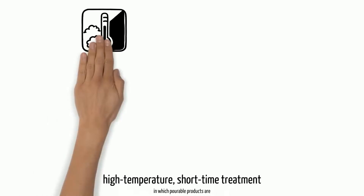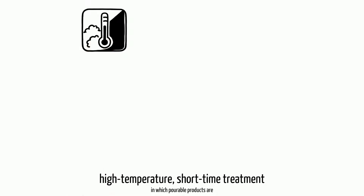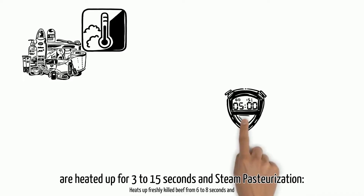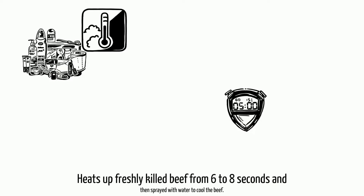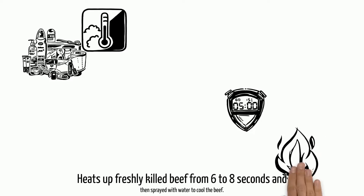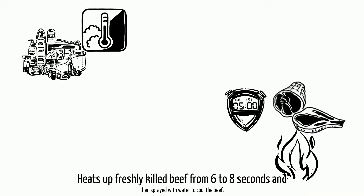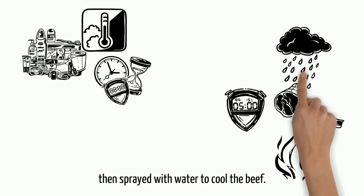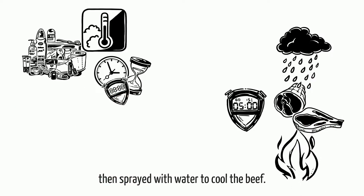Other types of pasteurization consist of flash pasteurization, which involves a high temperature, short time treatment in which pourable products are heated up for 3 to 15 seconds, and steam pasteurization, which heats up freshly killed beef for 6 to 8 seconds and then sprays it with water to cool the beef.